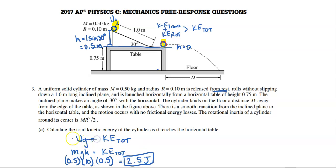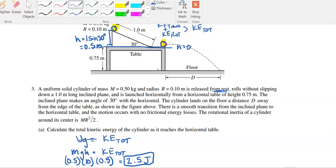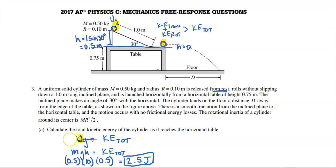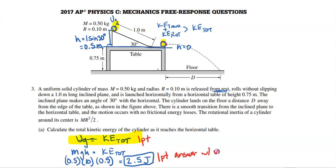For the AP rubric, you get one point for using conservation of energy — mark that in red. Then you get one point for the answer with units, so make sure you have units on that answer.